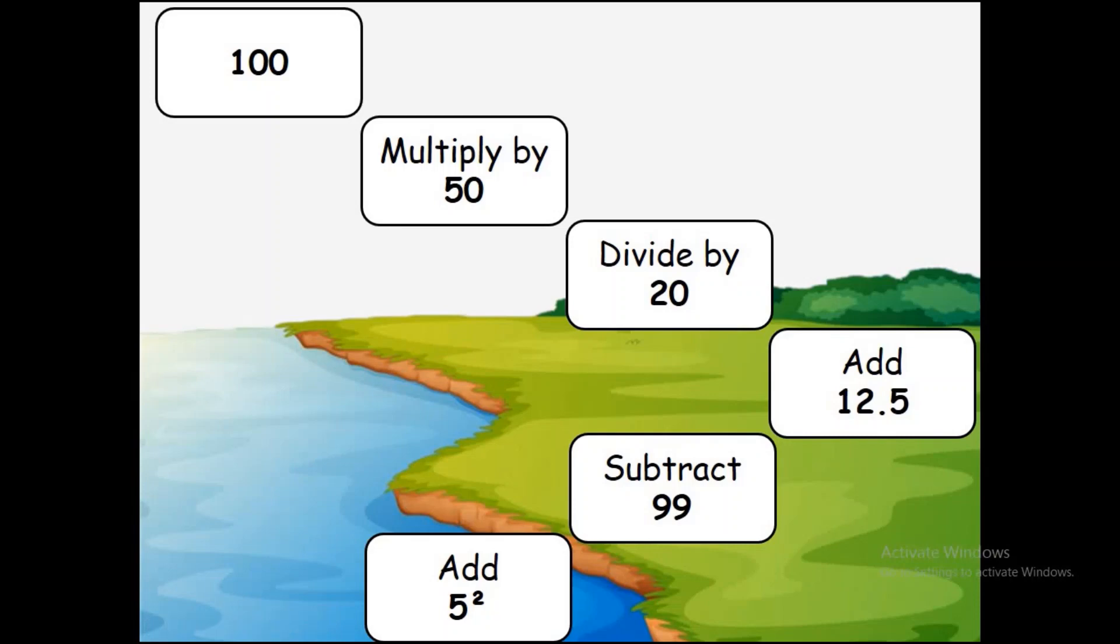Yep, that's right. So start here with 100, then we're going to multiply it by 50, then whatever answer you get from that you divide by 20, then you're going to add 12.5, then you're going to subtract 99, and finally you're going to add 5 squared. Pause the video, work it out, and then we'll go over the answers.